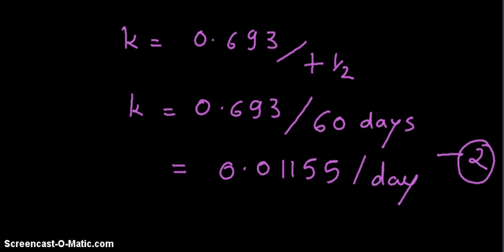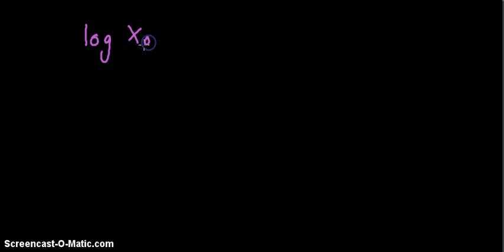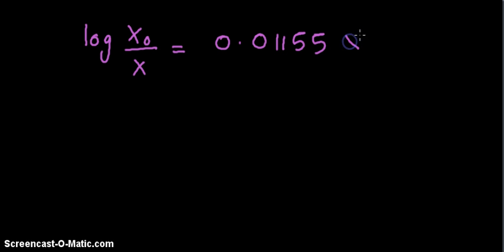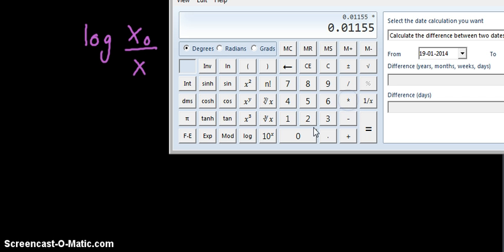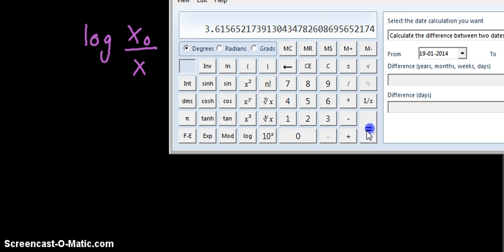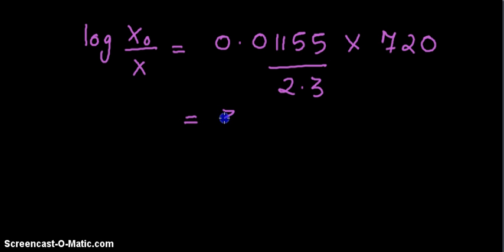We call this equation number 2. Plugging this value into the first equation — log(x₀/x) — we get: 0.693 divided by 60 equals 0.01155, which is the value of K, multiplied by time T equal to 720 days, divided by 2.3. This gives us a value equal to 3.6.